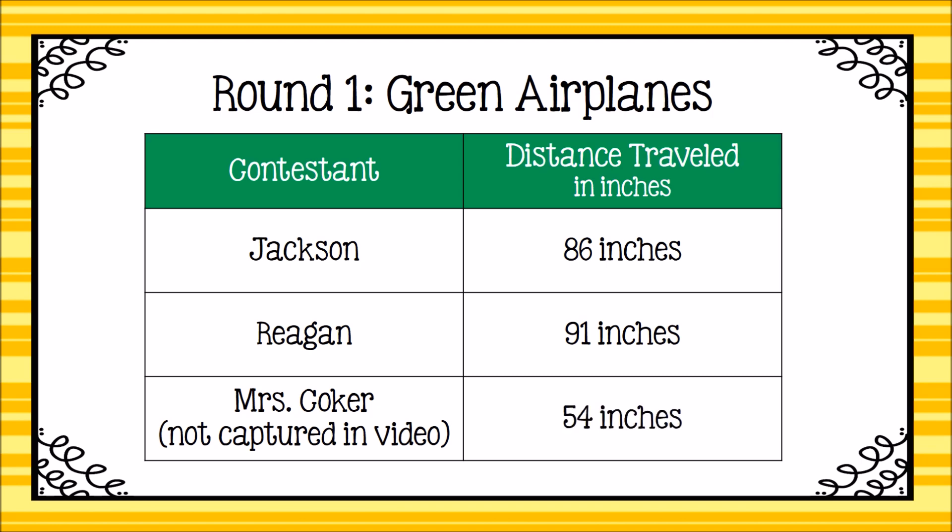At this point, pause the video to determine our round one first, second, and third place winners. Then determine how much farther our first place winner traveled than our second place winner. When you have those answers, press play. Based on these measurements, Reagan is in first place, Jackson in second place, and Miss Coker in third place. Reagan's plane traveled five inches farther than Jackson's.